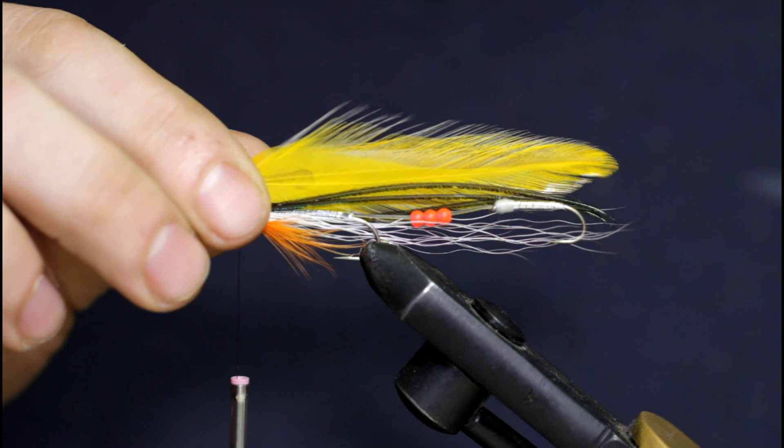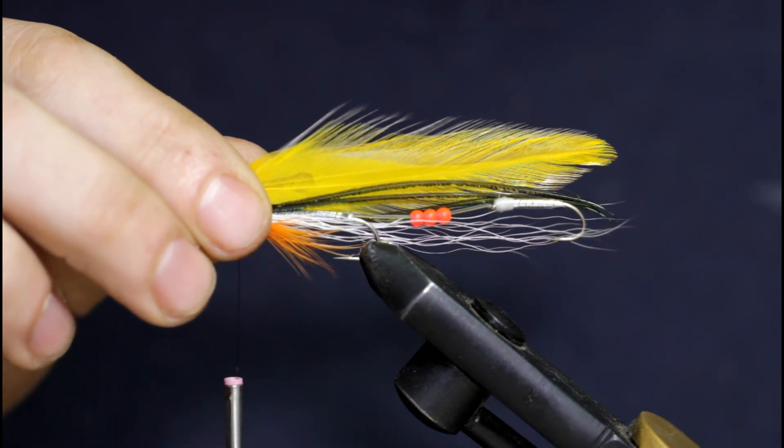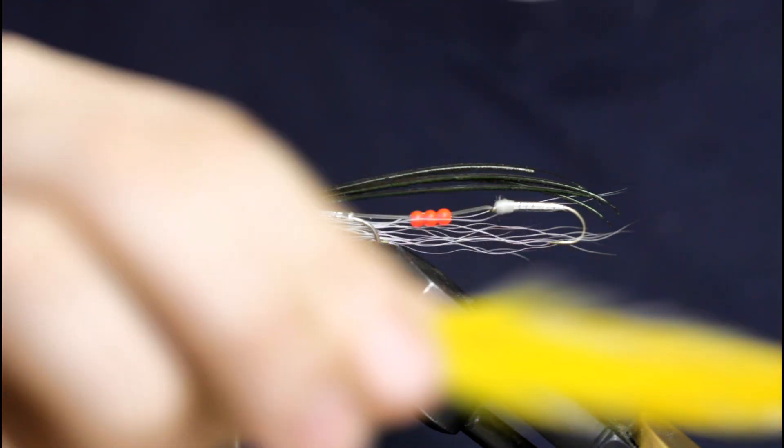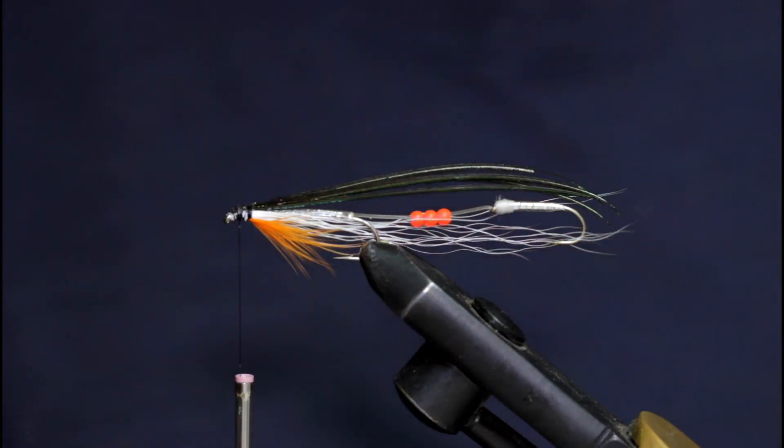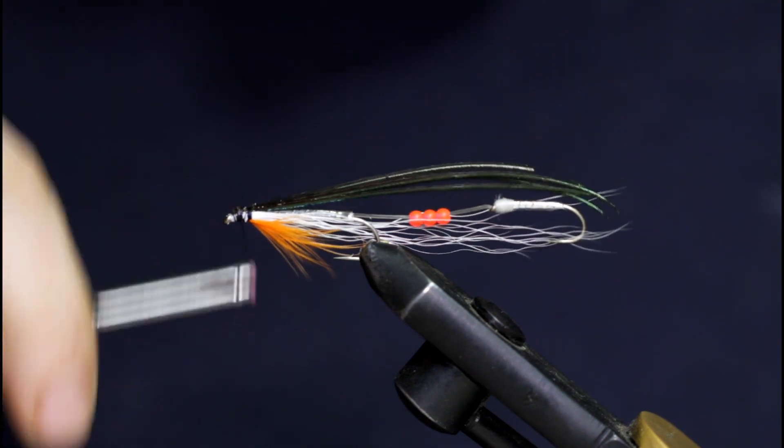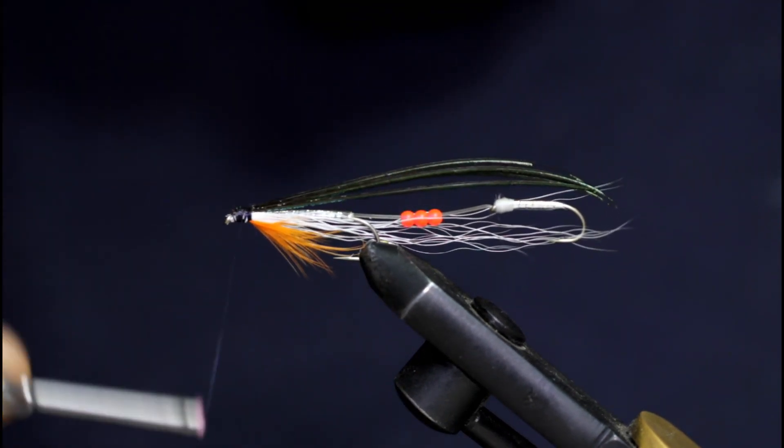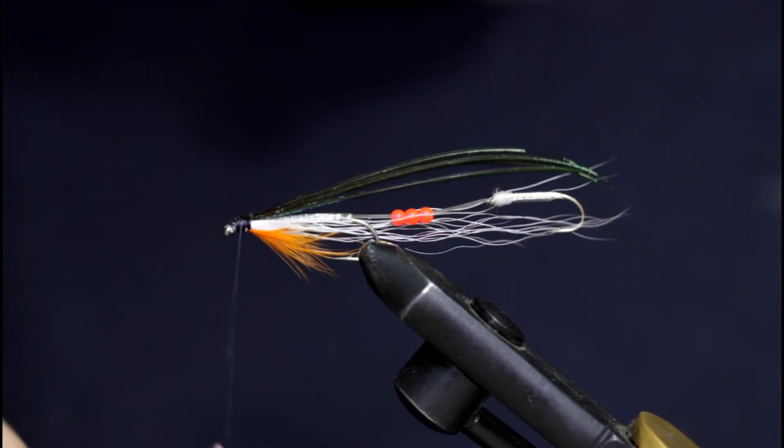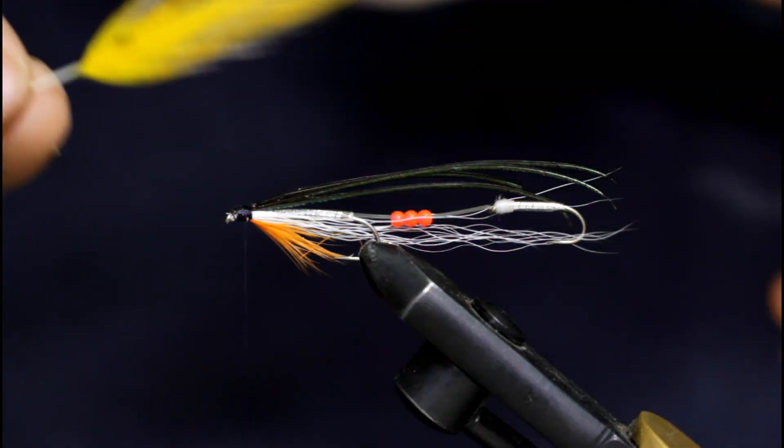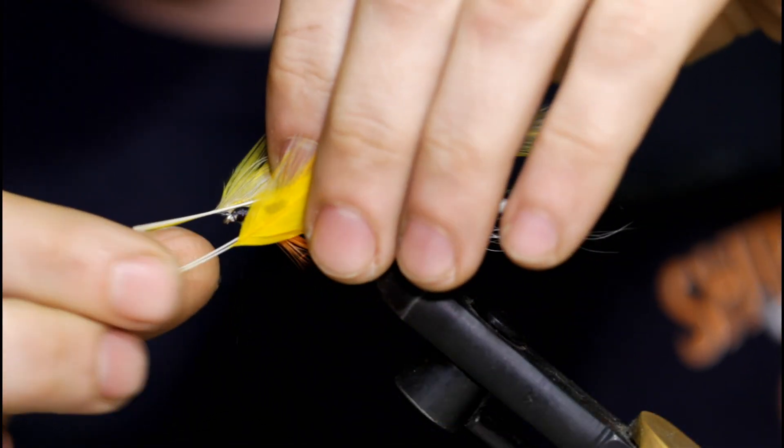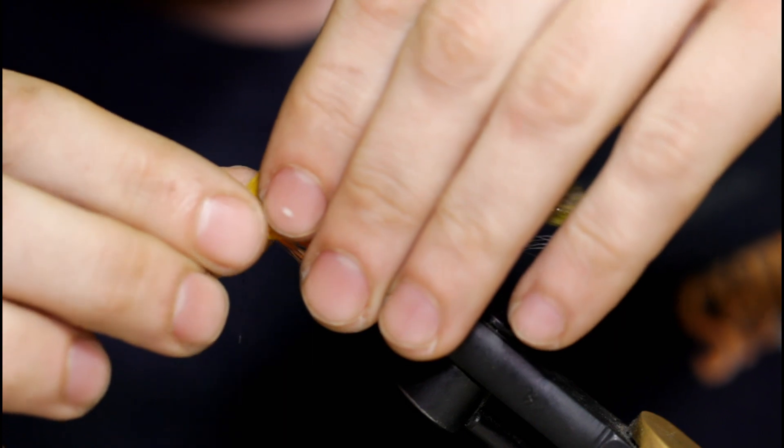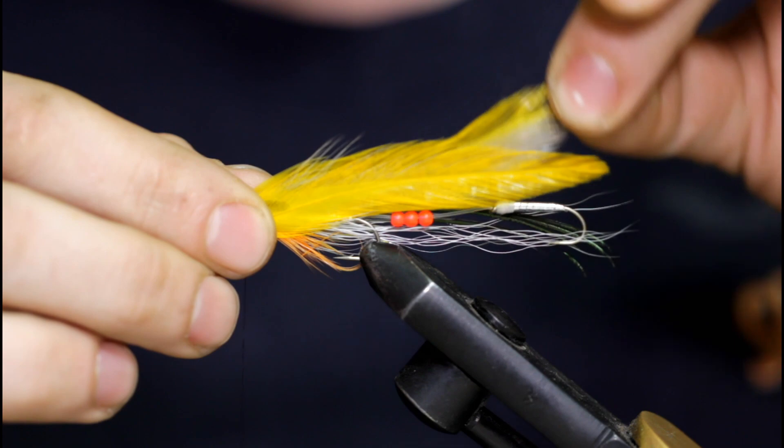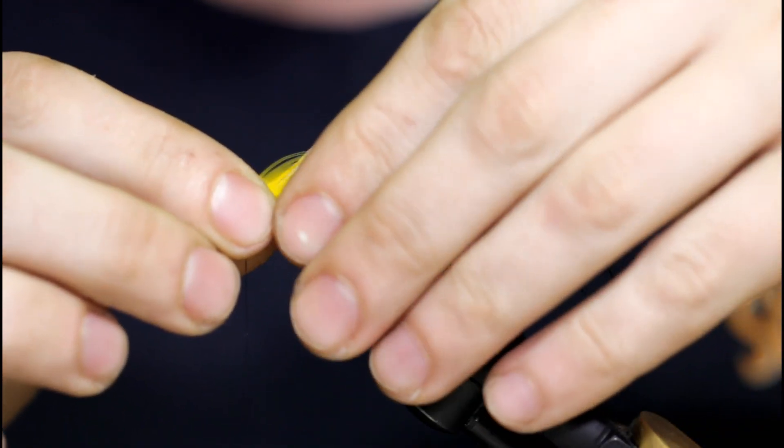So I've got all four feathers together here, and this is what they'll look like. That looks pretty good. There's a slight curve to it, but overall everything kind of goes together well. First I'm going to move my thread back. I'm going to grab both feathers, tie them in at the same time. Take some wraps forward here.